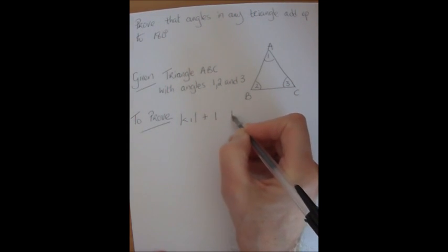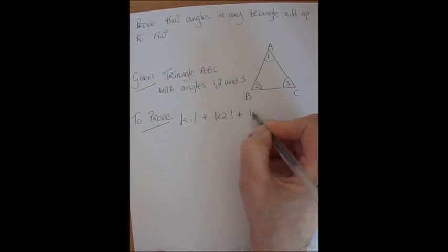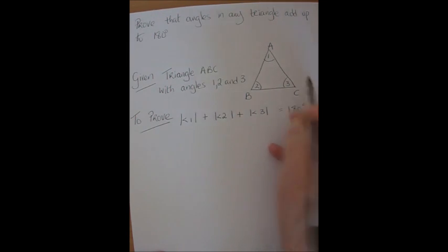These lines here mean measure of. Now my final line of my proof should be exactly the same as what I set out to prove.